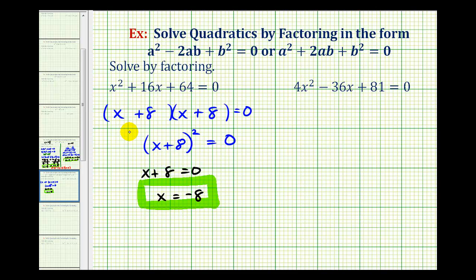Now because we do have two factors of x + 8, sometimes we'll say that this solution has multiplicity of two or that it's a double root or double zero.